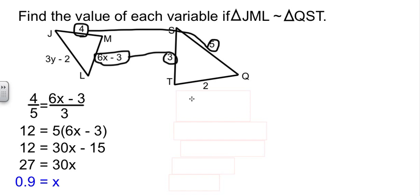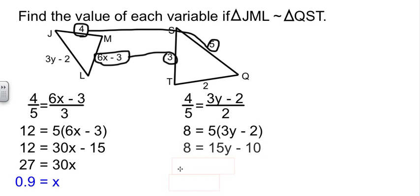Similarly, to find y, I'm going to stick with 4 and 5, because numbers are easier to work with than 6x minus 3 would be. 3y minus 2 has to match 2, it's the only ones left. Cross multiply, distribute, add 10, and divide.